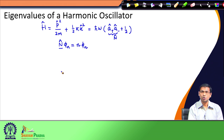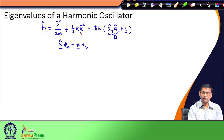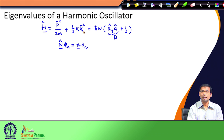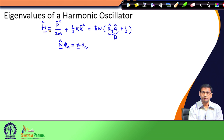Since N is a Hermitian operator, n is going to be a real eigenvalue. Another thing to remember is that looking at the Hamiltonian operator, which is a sum of p² and x² operators — p is a Hermitian operator, so its eigenvalues are real; p² eigenvalues have to be real and positive. Similarly, x is also a Hermitian operator with real eigenvalues, and x² eigenvalues are going to be real and positive. Therefore, the eigenvalues of the Hamiltonian operator for the harmonic oscillator are going to be real and positive.